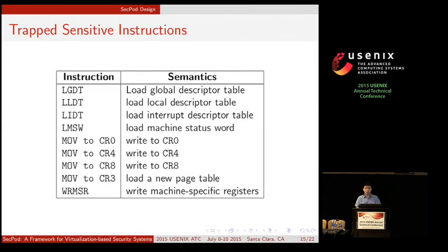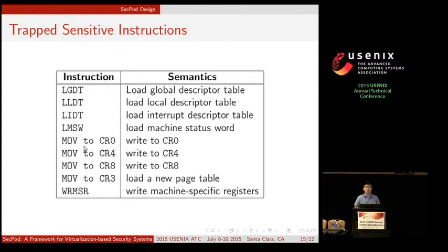Here is a list showing some of the potentially malicious privileged instructions: move to CR3, which loads a new page table; move to CR0, which changes protection bits in control register zero; and load GDT, which loads the global descriptor table and sets up segmentation.